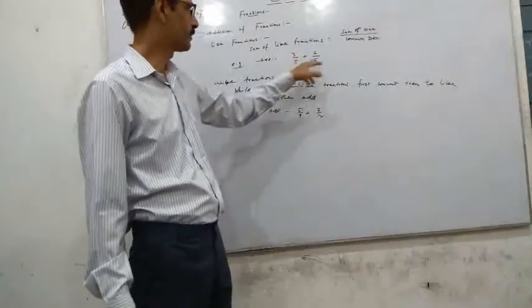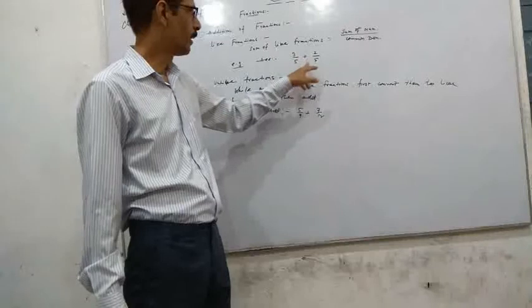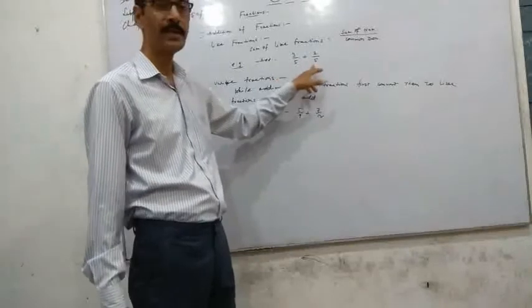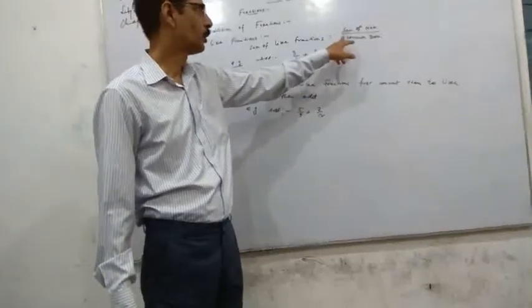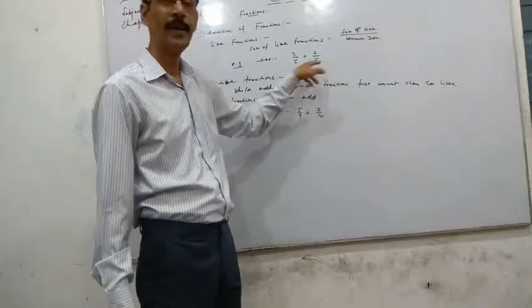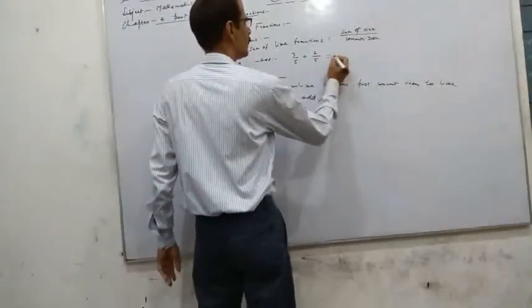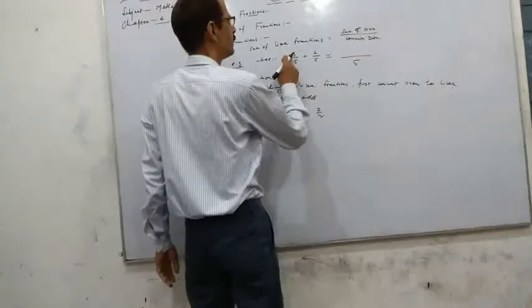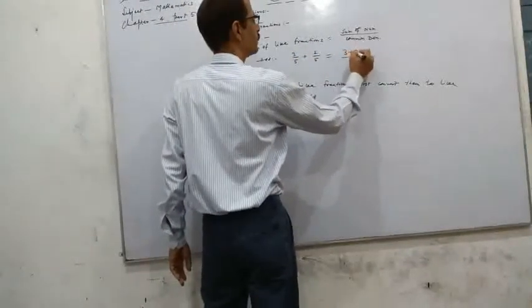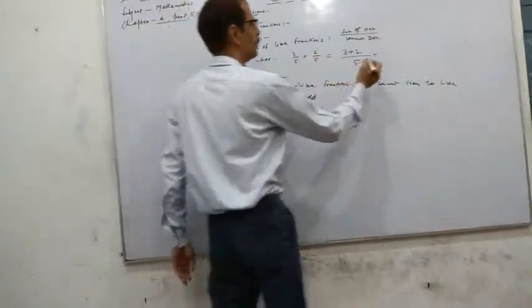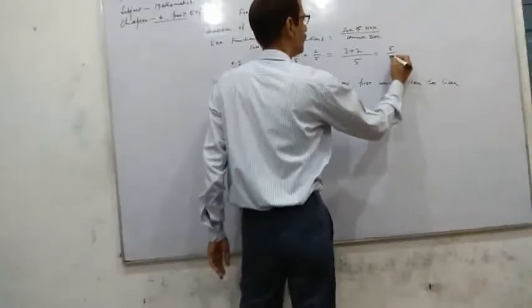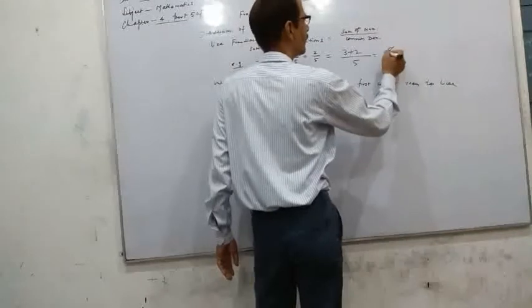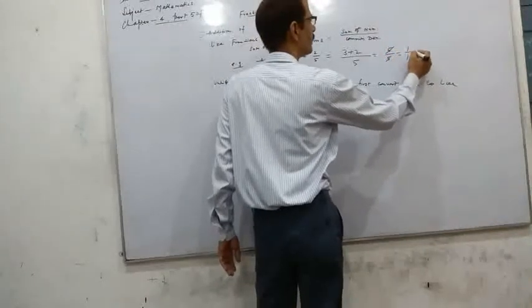Add two fractions given here: 3 by 5 plus 2 by 5. Here denominator is same, that means common denominator. So you add according to this rule, sum of numerator divided by common denominator. So common denominator is 5, and sum of numerator, the numerator is 3 plus 2. That means 3 plus 2 equals 5 by 5, which equals 1.